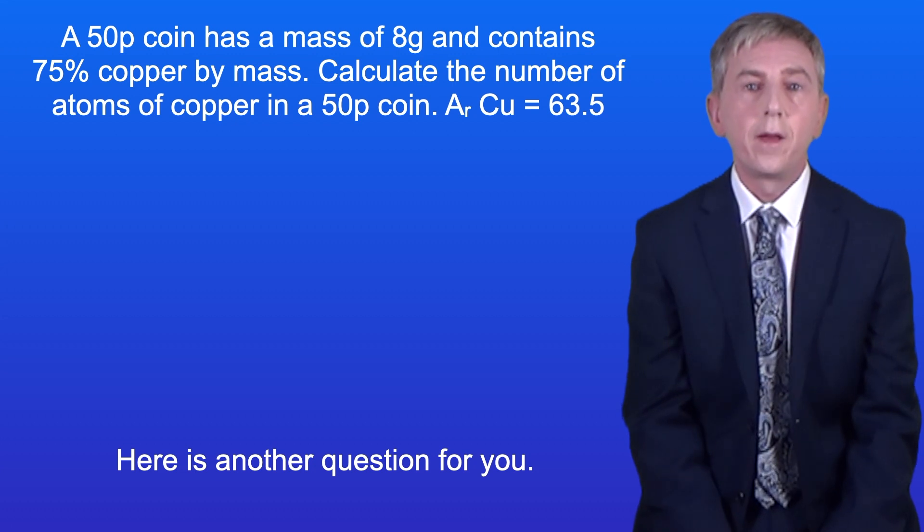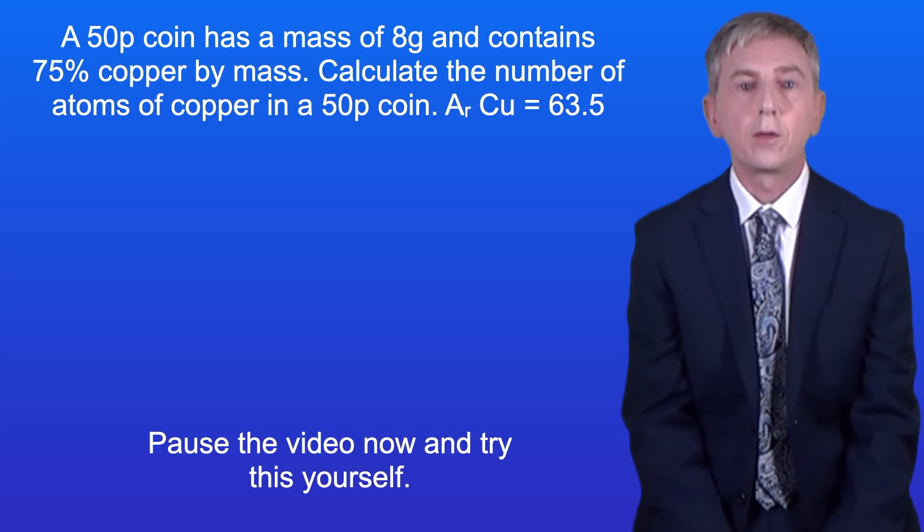Okay here's another question for you. A 50 pence coin has a mass of 8 grams and contains 75% copper by mass. Calculate the number of atoms of copper in a 50 pence coin. So pause the video now and try this yourself.